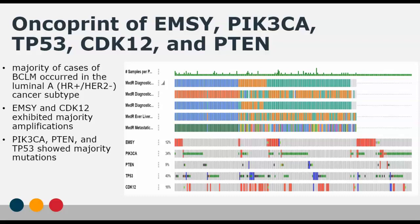I've added a few additional tracks that I wanted to include in my specific study. Starting from the top, there are samples per patient, the medical diagnostic ER status, the diagnostic HER2 status, the diagnostic PR receptor status, the status of liver metastasis at any course during the disease, and the status of the metastatic site at the time of diagnosis. Below are all the genes included in my specific query.